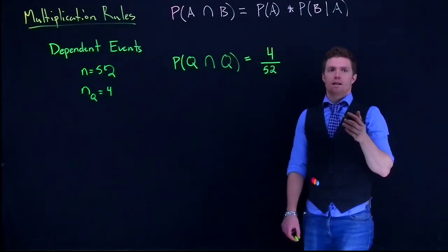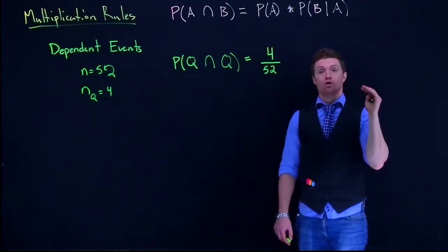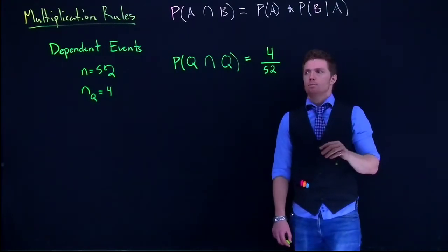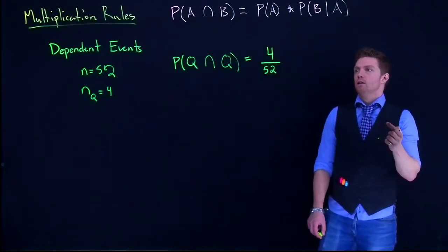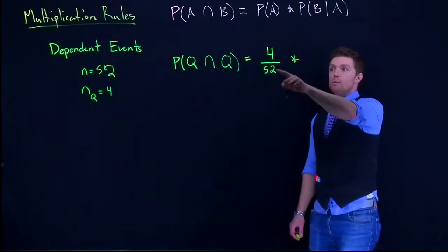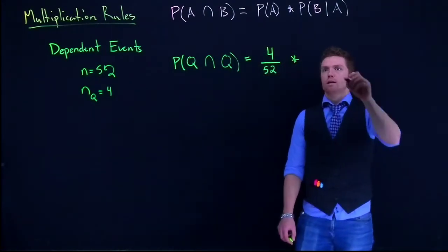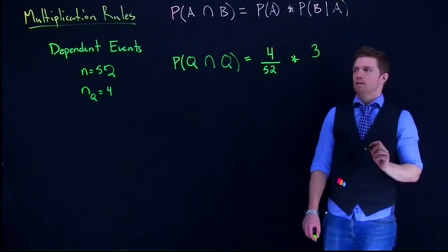Now your initial thing is, oh, it's just 4 divided by 52 again. And that would be if you stuck the card back in the deck. But for this one, we are going to say we are drawing two cards from the deck. So this next time through, there are not four queens anymore. Assuming that we drew a queen on this first one, there are only three queens left in the deck.